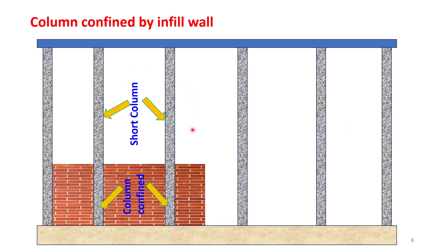Partial confinement of infill may also produce the short column effect. For example, where infill has been placed to a certain height — not the full height — along both sides of a column, the column cannot move laterally in the region confined by the infill. Only the portion of the column above the infill is free to move sideways. That free height is shorter than the neighboring columns, so this part of the column acts as a short column — arising from partial infill provision.